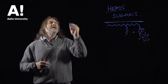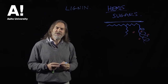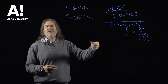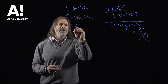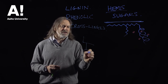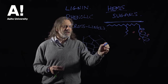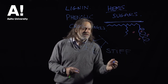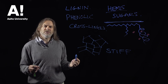Lignin is a completely different molecule from cellulose and hemicelluloses. It's made from what are called phenolic subunits, which are derived from photosynthesis via a biochemical pathway, and it's completely different in its structure. It has this cross-linked network structure — lots of cross-linking. That's not an exact representation, obviously, but this cross-linked structure has the property of being very, very stiff. So lignin provides stiffness to the wood, hemicelluloses provide flexibility, and cellulose provides the strength.